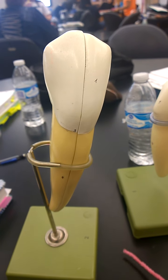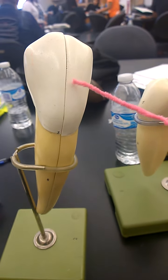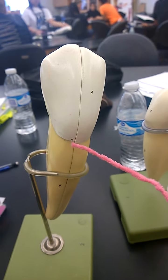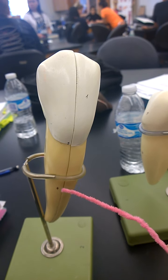All right, so this is the canine tooth. Number one is the crown. Number three is the neck. Number four is the root.